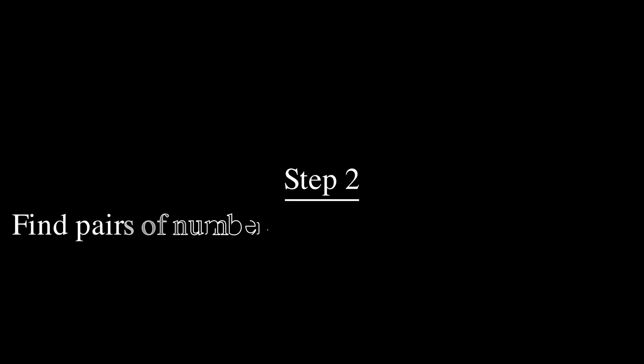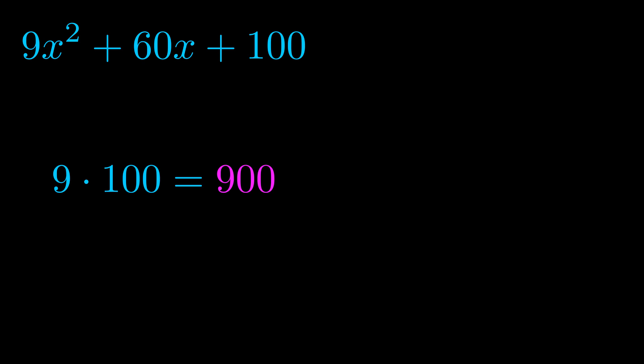Step two is to try to find all of the pairs which multiply to this number. Now it turns out you don't really need to find all of them but go ahead and write down as many numbers as you can that multiply to the magenta value for now. Pause the video and resume when you're ready to continue.